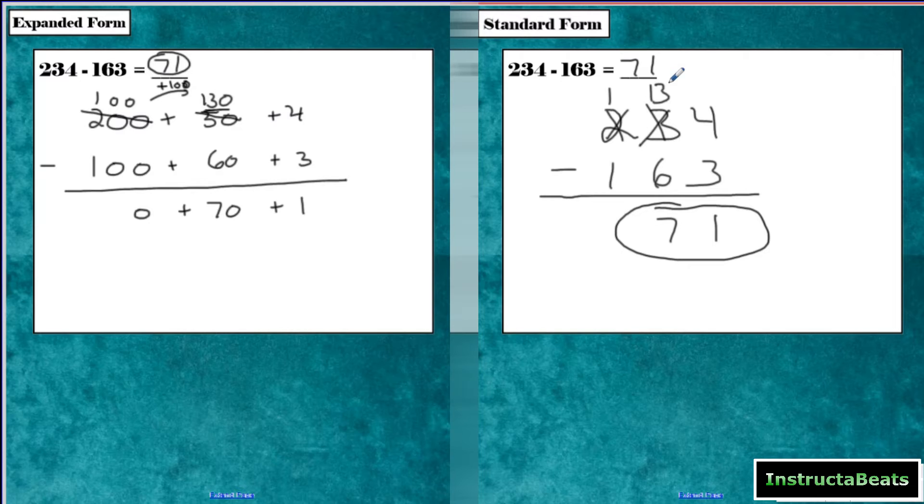Again, the benefit of the standard algorithm is it's a lot faster, but you have to be neat, and we don't want you just memorizing steps. We want you to understand that really this is 4 ones minus 3 ones, this is 13 tens minus 60 or 6 tens, and this is 100 minus 100. If you're going to do the standard algorithm, you have to understand what you're doing. Don't just use it as a shortcut.